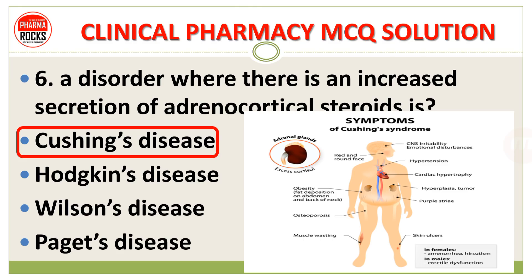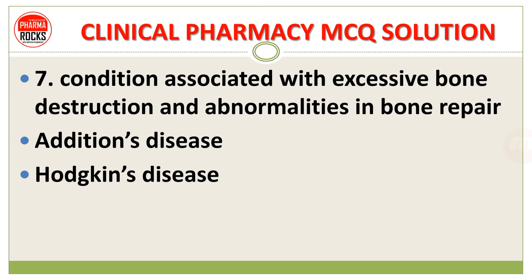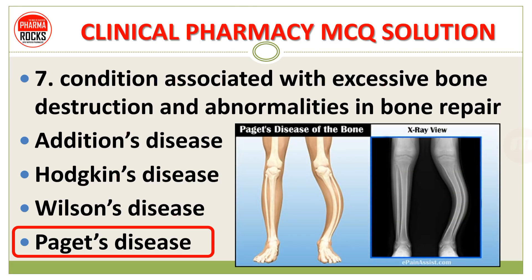Number 7: Condition associated with excessive bone destruction and abnormalities in bone repair — is it Addison's disease, Hawking's disease, Wilson's disease, or Paget's disease? The correct answer is option D, Paget's disease. Here we can see the diagram of Paget's disease and also its X-ray.